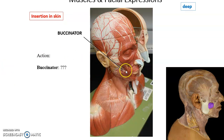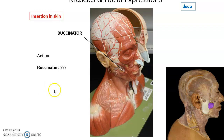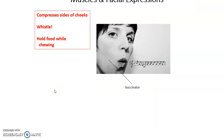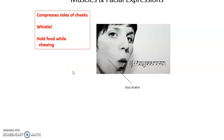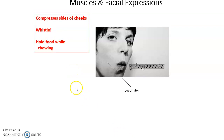The buccinator muscle — one on each side — is a deep muscle that lies under the mandible and other muscles. On either side of the cheeks, the buccinator helps to compress the cheeks, which is useful when holding food in the mouth or when whistling.